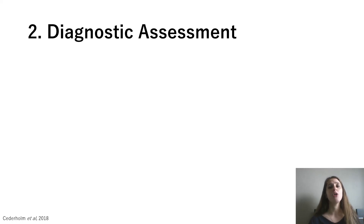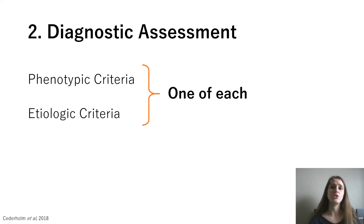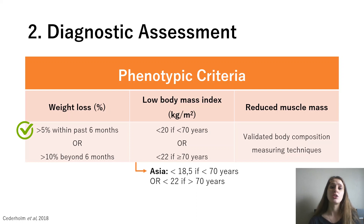From the previous video, we mentioned that there are two diagnostic assessment criteria that need to be met: the phenotypic criteria and the etiologic criteria. In order for her to be diagnosed with malnutrition, she needs to meet at least one from each criteria group. When we look at the phenotypic criteria, there are three different criteria: non-volitional or unintentional weight loss, low BMI, and reduced muscle mass. We can definitely say she meets the first criteria, as she has lost nine percent of her body weight in one month.